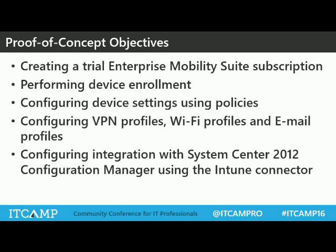The rest of the presentation is about how to approach a proof of concept. The typical activities are: first, create the trial subscription; then enroll some devices — I typically use an Android device, a Windows Mobile device, and a Windows 10 workstation. Then configure device settings using policies. You can configure VPN profiles, wireless profiles, and email profiles — these are about automatically configuring settings on managed devices. You can configure a VPN connection automatically, configure the wireless network to authenticate using certificates, and configure settings for email accounts. From the Intune console you can apply all these settings to managed devices.